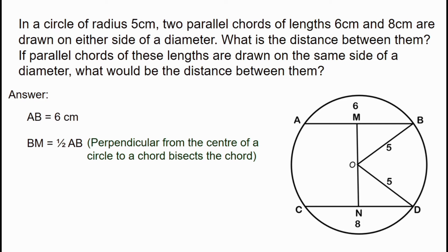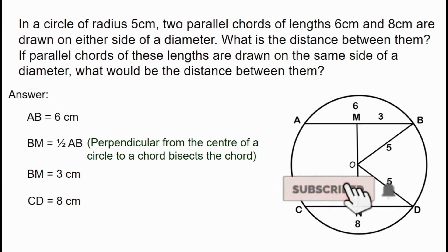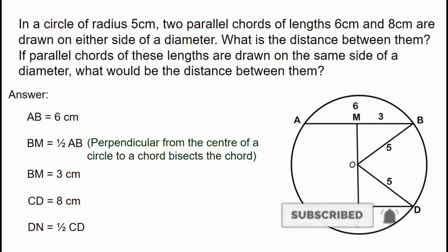Let chord AB be 6 cm. Since the perpendicular from the center bisects the chord, half of AB gives us BM = 3 cm, because the perpendicular line passes through the center of the chord.